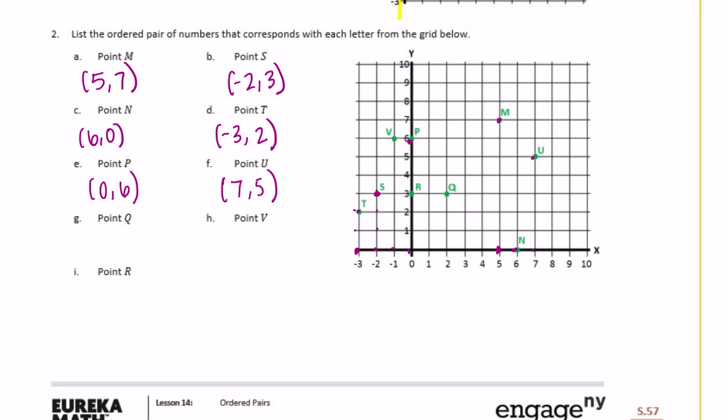Point q is right here. That is 2 and then up 3. So 2, 3. Point v right here. So we go negative 1 and then positive 6. And point r. So again, point r, we don't go anywhere on the x axis. So the x is going to be 0. Then we go up 3 to get to r. So 0, 3.